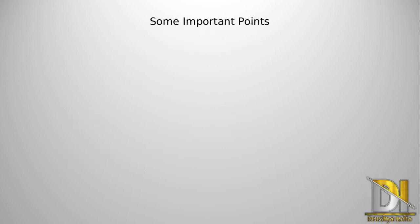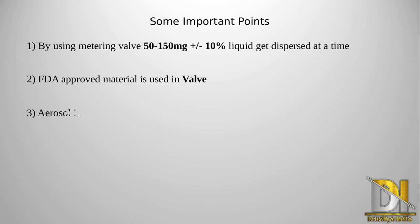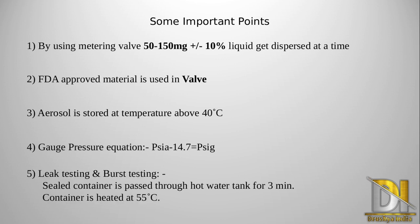Some important points regarding aerosols: by using the metering valve, drugs can be delivered in the range of 50 to 150 mg plus or minus 10%. FDA-approved material is used in the valve. Aerosol is stored at a temperature below 40 degrees Celsius. The gauge pressure equation is PSI - 14.7 = PSIg. For leak testing and burst testing, the sealed container is passed through a hot water tank for 3 minutes and then heated at 55 degrees Celsius; if the container is leaking, it shows defects and can be removed from the batch.